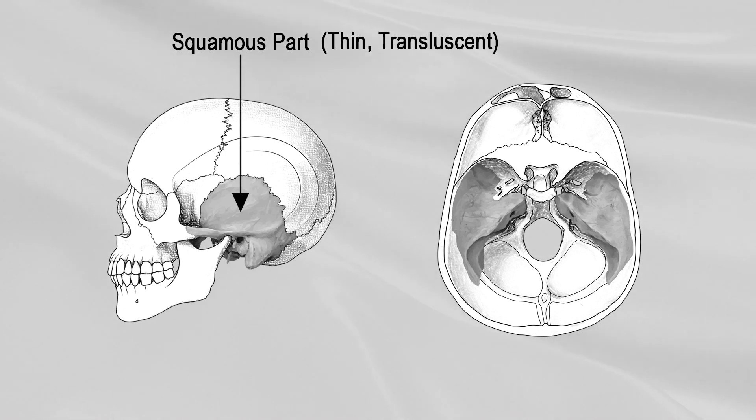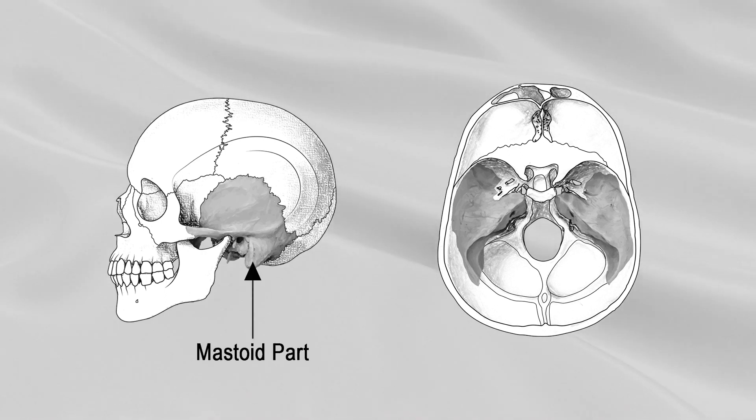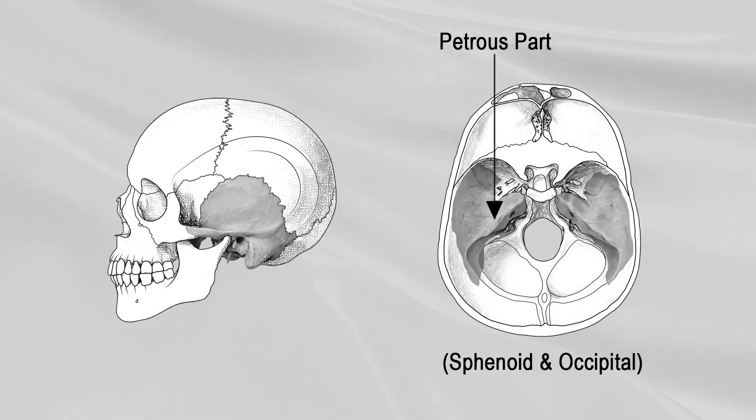The squamous part forms the anterosuperior part of the bone, which is thin and translucent. The mastoid part forms the posterior part of the bone. The petrous part is pyramidal and is wedged between the sphenoid and occipital bones at the base of the skull.